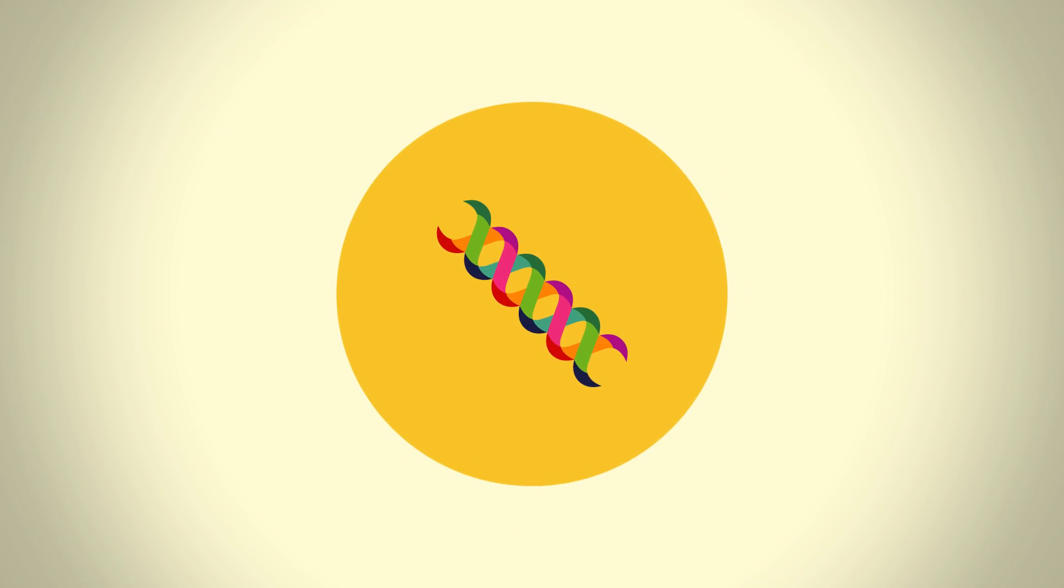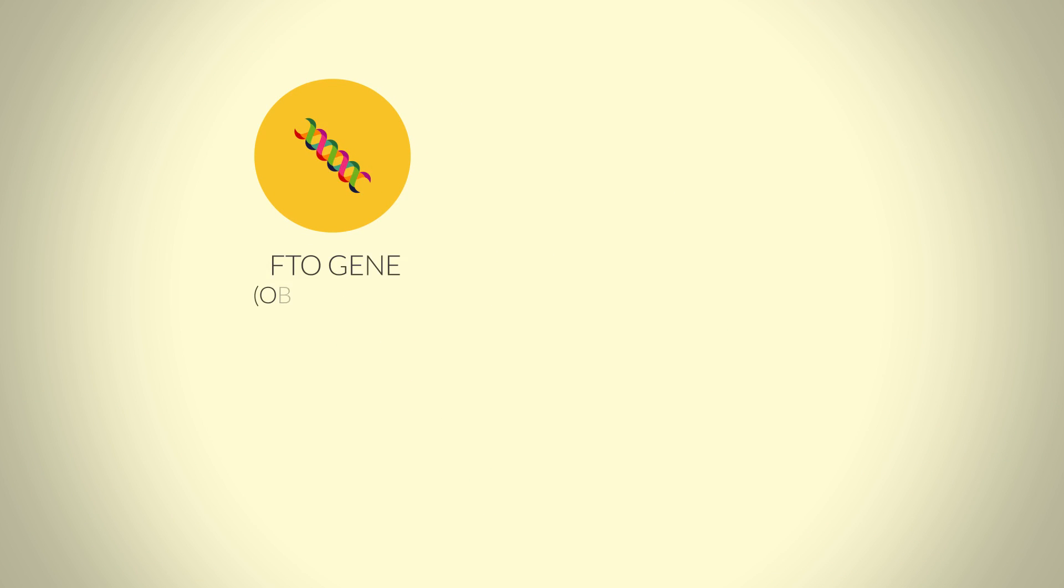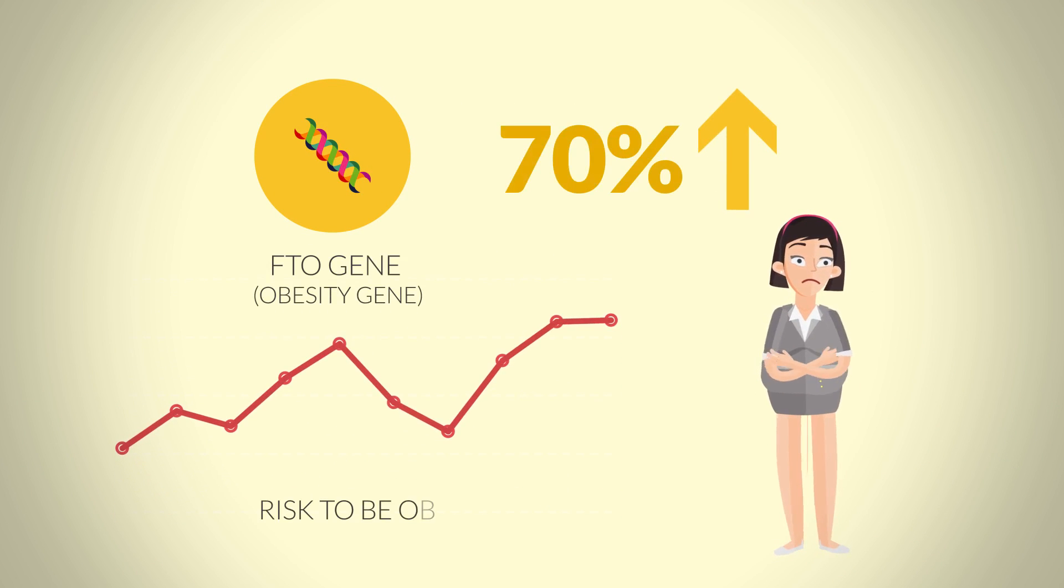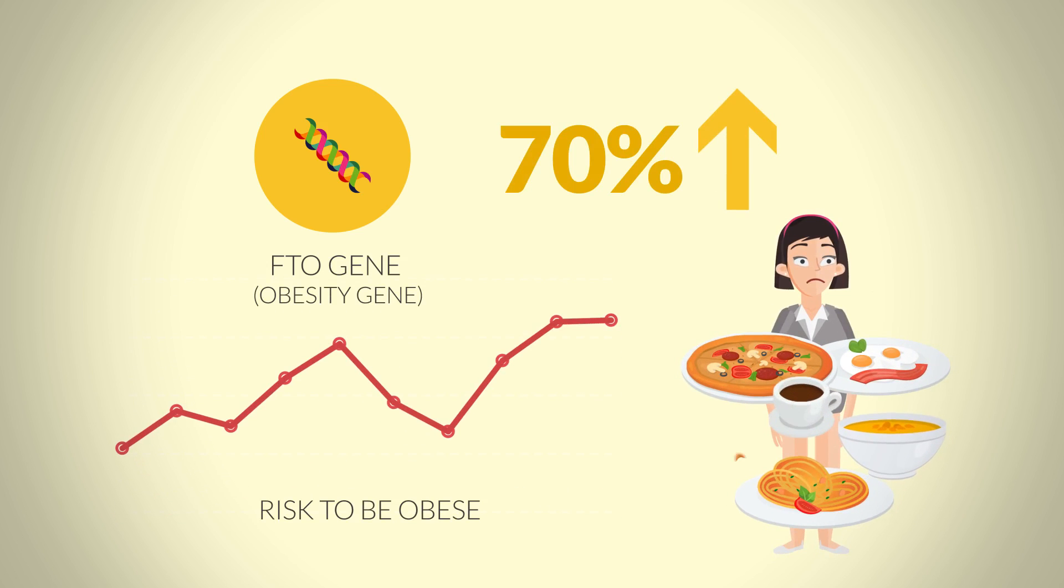For example, if you have a variation in the FTO gene, also known as the obesity gene, studies show that you would be 70% more likely to be obese as you would tend to eat more.